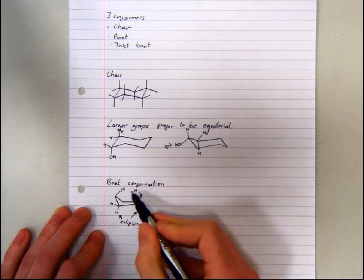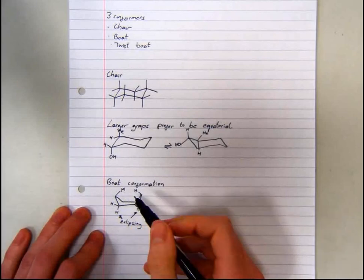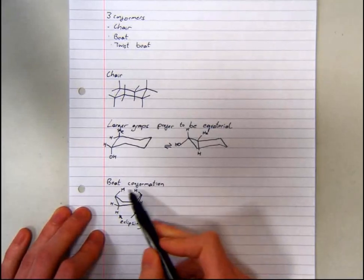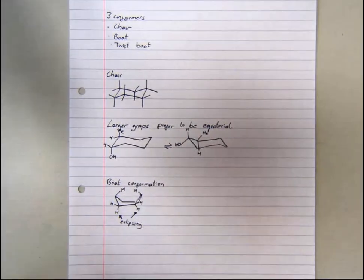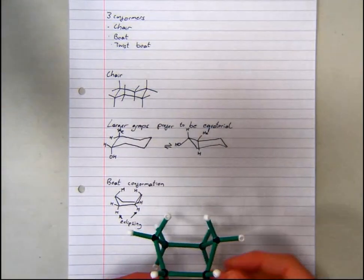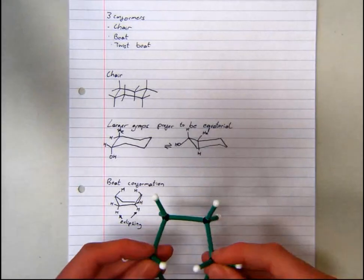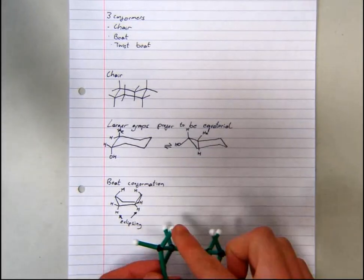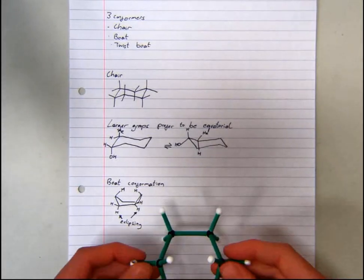The two hydrogens at the top now suffer from flagpole interactions, as they are quite close to each other. This can be shown by the 3D model of the boat conformation, as these two hydrogens are in close proximity to one another.